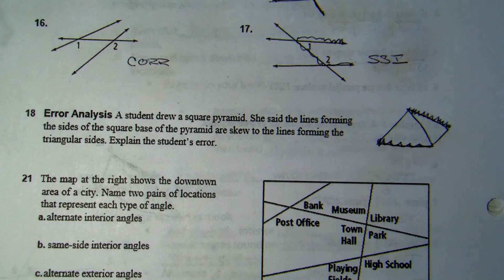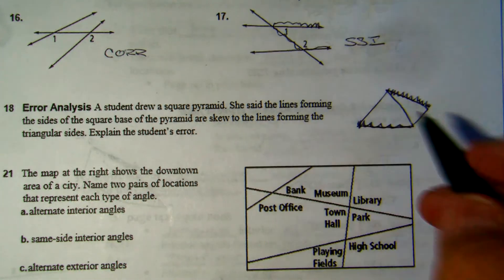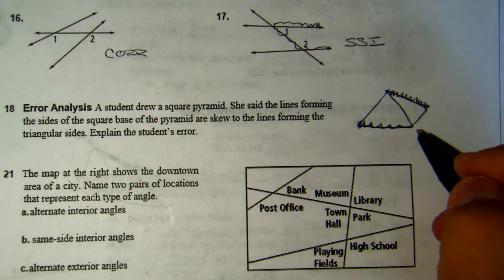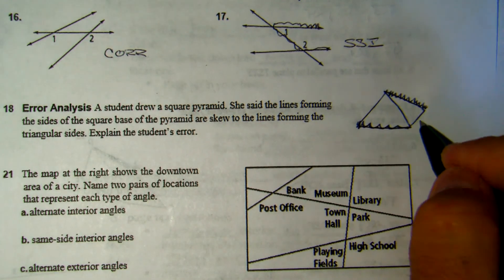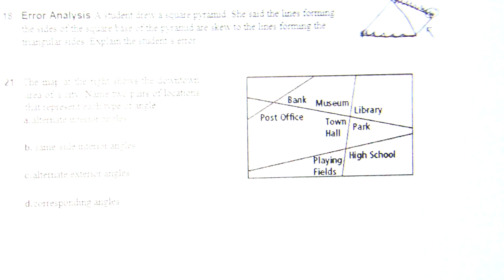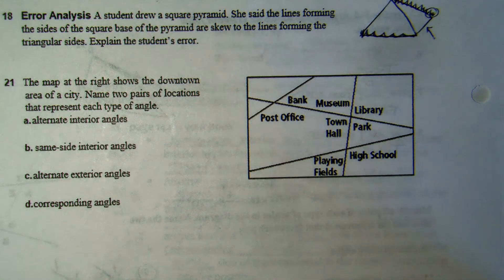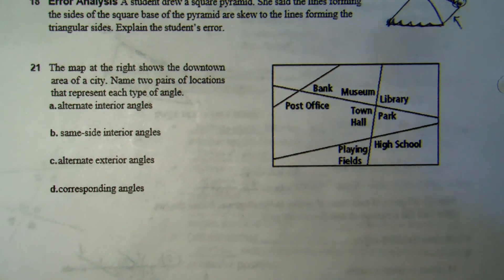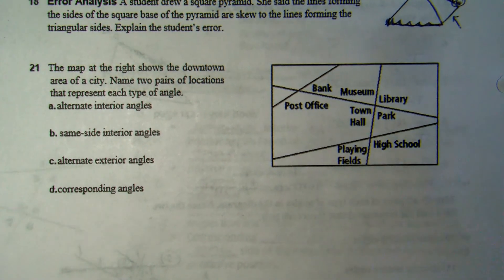Even dealing with three dimensions, some of those lines are skewed — that's true. But if you look at other pairs, they intersect. So you can find an example of skew lines in the diagram, but not all pairs are skewed. Just be very careful when you say 'all.'